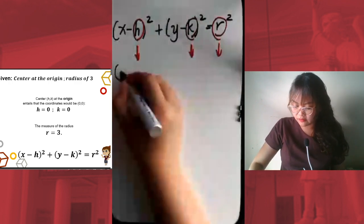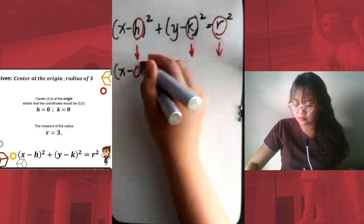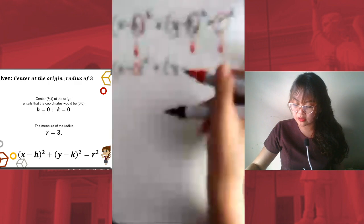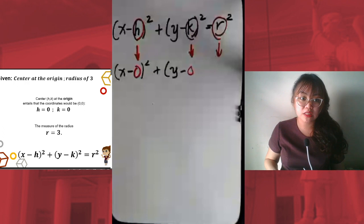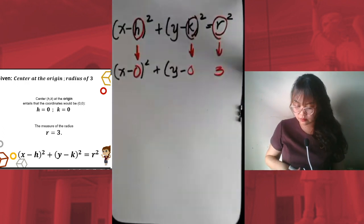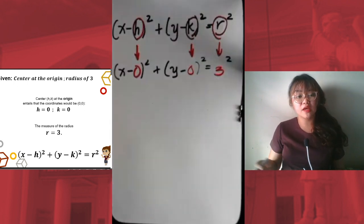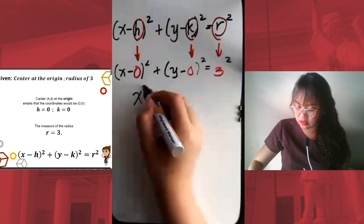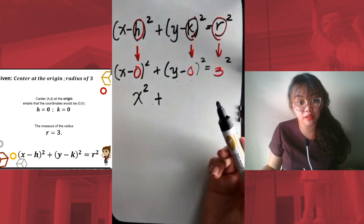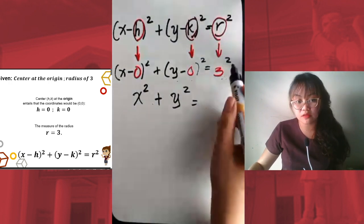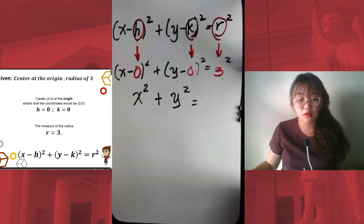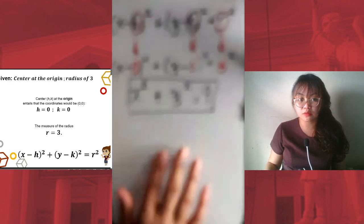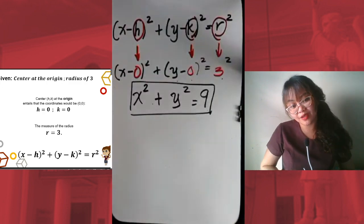If we now substitute, we have x minus h, where h is 0, squared; plus y minus k, where k is 0, squared; equals r, where r is 3, squared. Now we simplify: x minus 0 is simply x squared, y minus 0 is simply y squared, and 3 squared is 9. So our answer is x squared plus y squared equals 9.